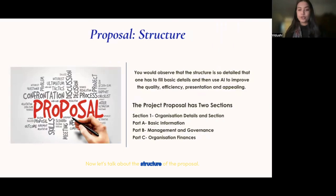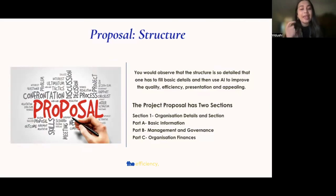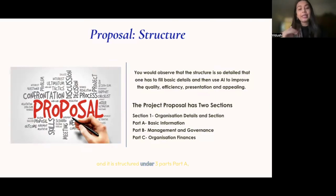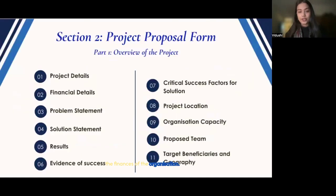Let's talk about the structure of the proposal. The proposal structure is detailed enough that one fills basic information and then uses AI to improve quality, efficiency, presentation, and appeal. The project proposal has two sections. Section one talks about organization details, structured under three parts: Part A — basic information; Part B — management and governance related information; and Part C — the finances of the organization. Section two talks about the project proposal form.